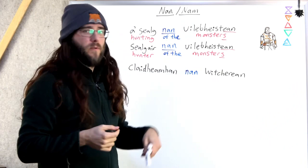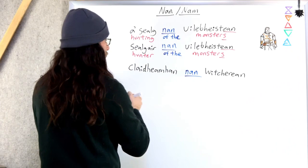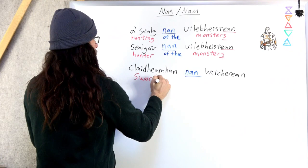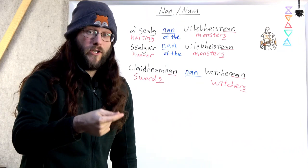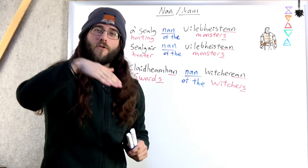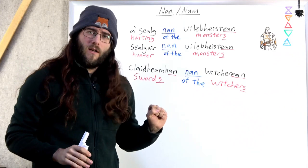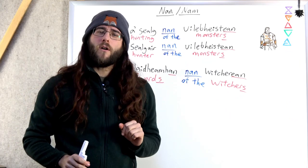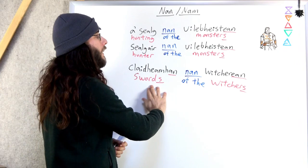With these non-Gaelic words, these loan words, a lot of times people just leave them how they are originally. But some folk like to put a little bit of a Gaelic ending on them, which is fine too. Cleuwen nan wichirin. Swords. Witchers. The swords of the witchers. The witcher's swords.